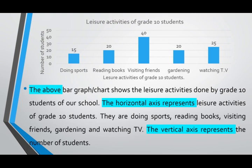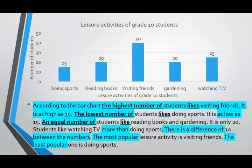We can describe the horizontal axis further. The horizontal axis represents the leisure activities of grade 10 students, and they are: doing sports, reading books, visiting friends, gardening and watching TV. It's very important to highlight the phrases: the highest number of, the lowest number of, and an equal number of. You have to use a singular verb with 'the number of.'